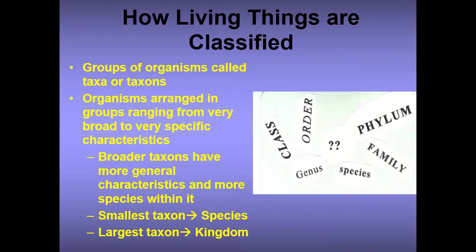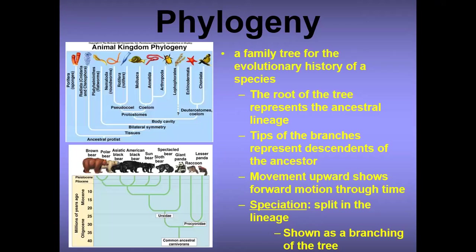How living things are classified: groups of organisms are called taxa or taxons. Organisms are arranged in groups ranging from very broad to very specific characteristics. Broader taxons have more general characteristics and more species within them. The smallest taxon is species, and the largest taxon is kingdom. You can also look at a family tree for the evolutionary history of a species — the root represents the ancestral lineage, and the tips of the branches represent descendants of the ancestor.